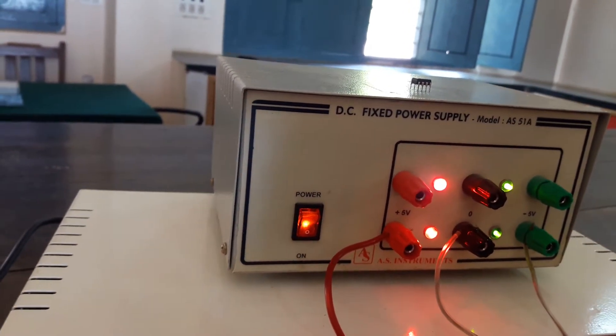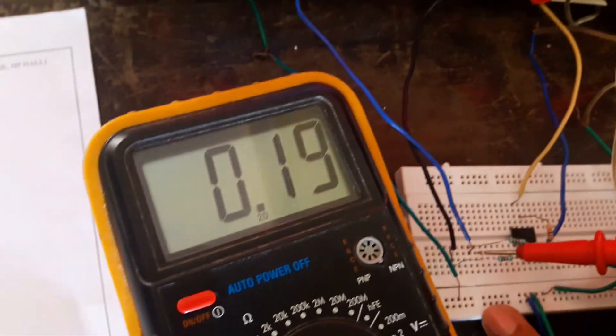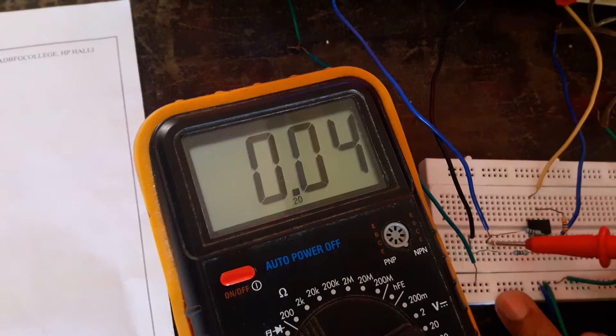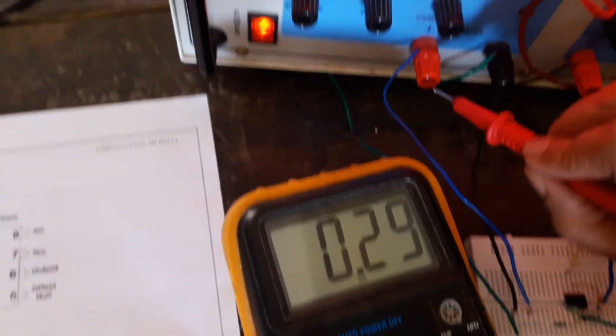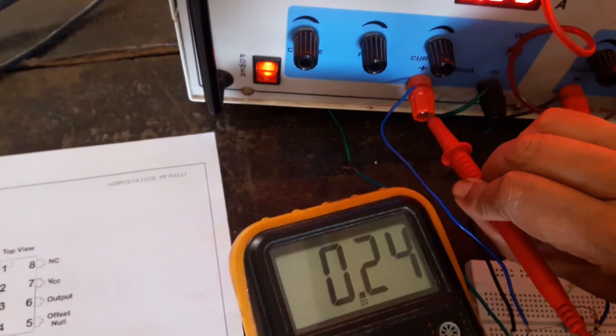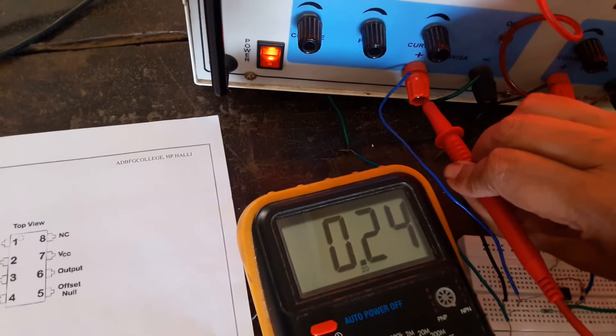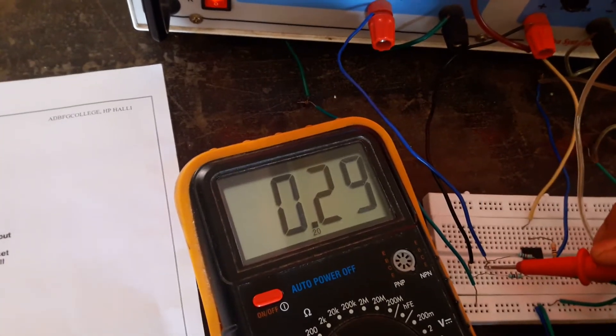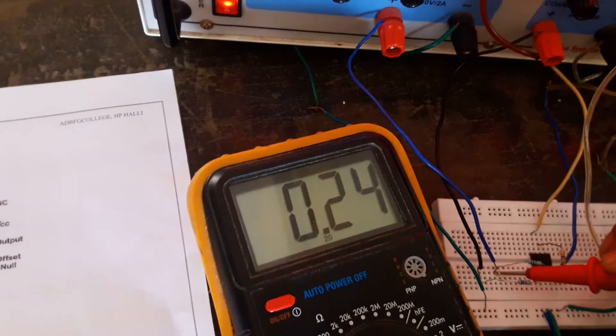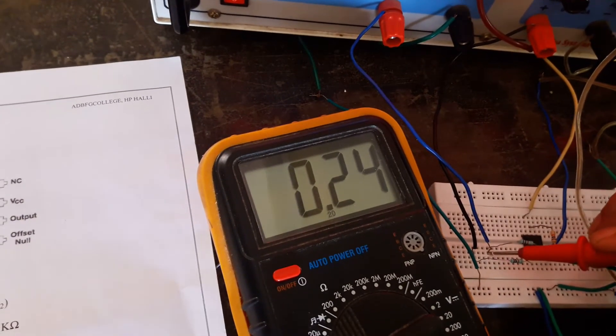Now let us take the readings. First we have to measure V1 at this point. If you feel discomfort measuring at this point, you can measure the input voltage V1 here instead. V1 is 0.24, and if you measure here also you will get the same value 0.24. Whichever you feel convenient, you can do the experiment that way.